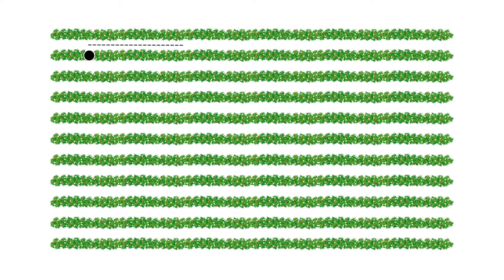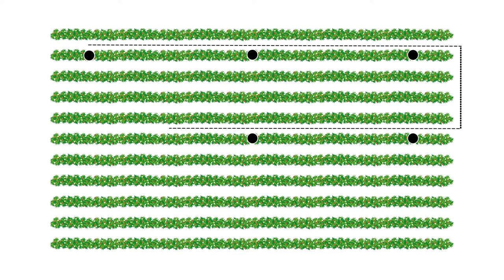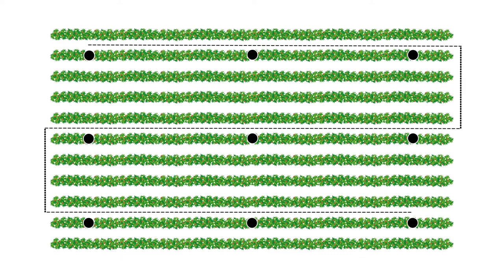Other designs that can be used include that used by AgriChain Scouts, where you choose three rows in a block — one on either side and one in the centre. You then scout three points on each row: one near either end and a third one in the centre. This design gives you nine sample points across the width of the block.